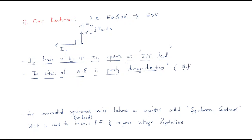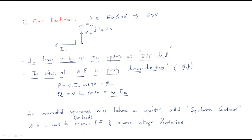Under this condition, the magnetization effect is purely demagnetization — meaning loss of magnetization and the flux decreases. The active power P = V·Ia·cos 90° = 0, and the reactive power Q = V·Ia.